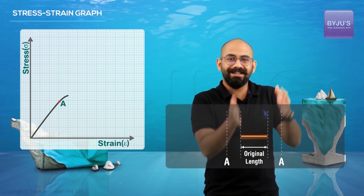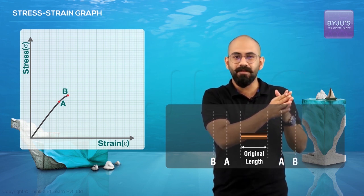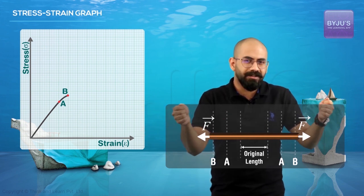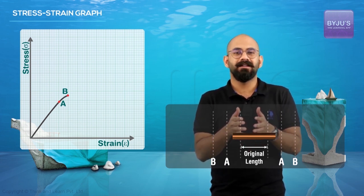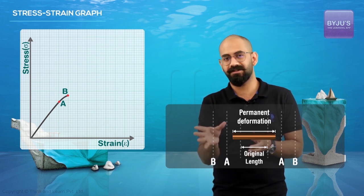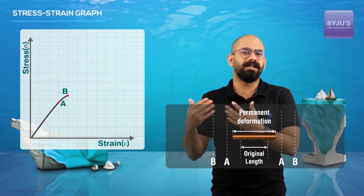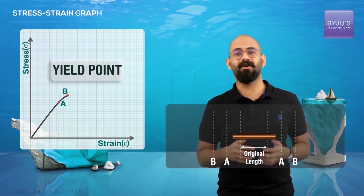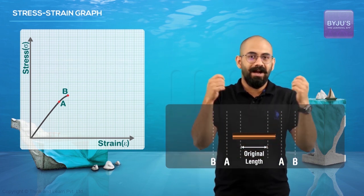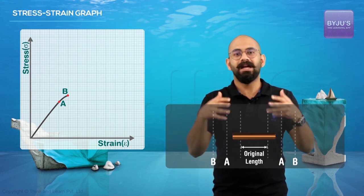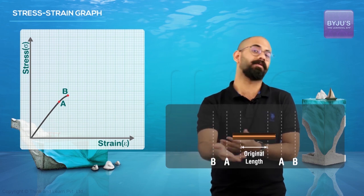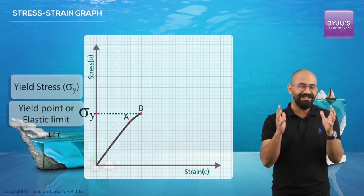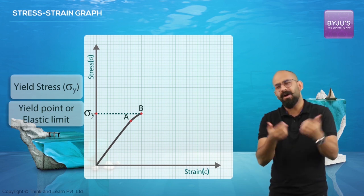Next, let's take another point B. After that point B, if I increase the stress beyond B and then bring it back slowly, I find that at zero stress there is a net strain — a net elongation — meaning we've created a permanent deformation, a permanent elongation. So point B is called the yield point or the elastic limit. The stress associated with that point is called the yield stress.